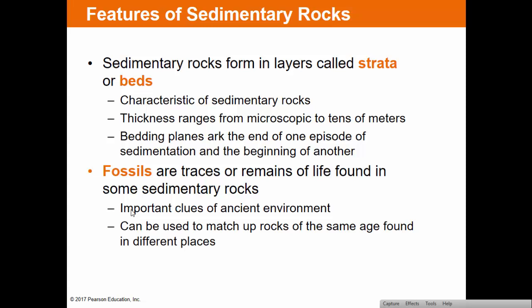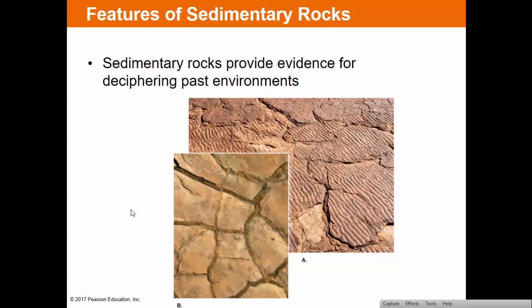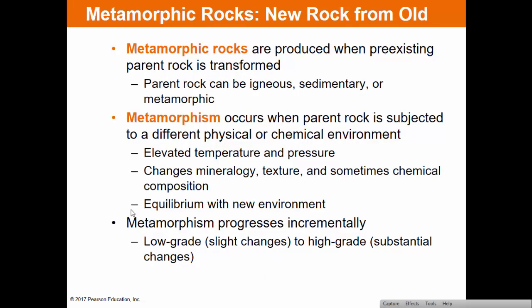Fossils found in sedimentary rock help us decipher past environments — whether fossils of living things or fossils of past environments like mud cracks or ripple marks. Those ripples on the right formed when sand was moved by waves, creating little hills. If covered by additional sand and silt, they could be compacted and preserved as fossils of the original ripples on the ocean floor.